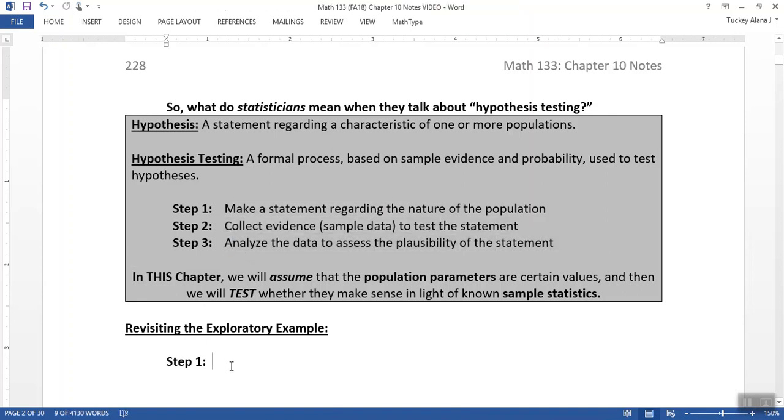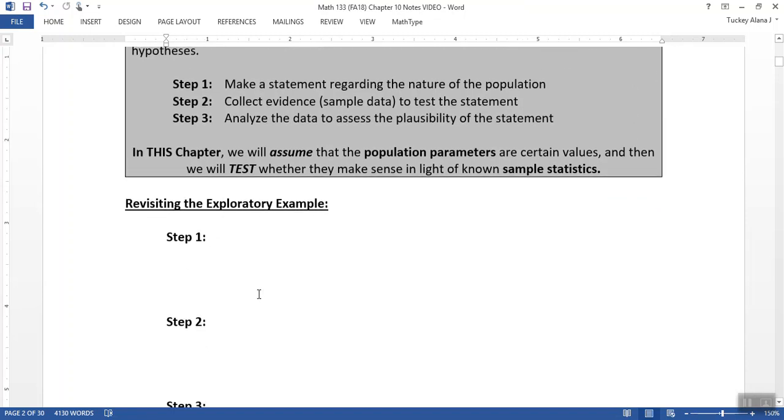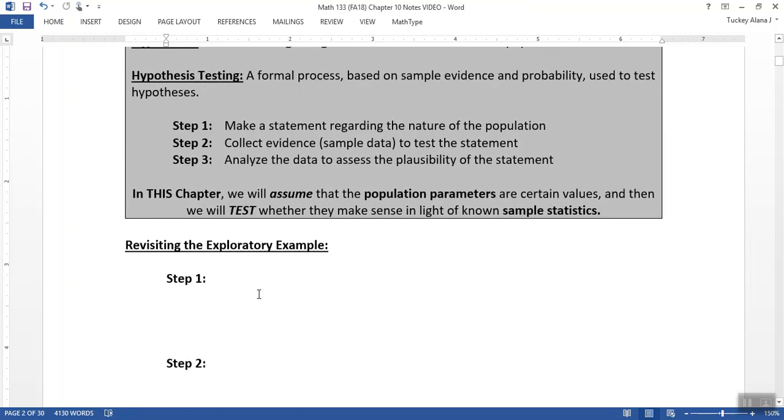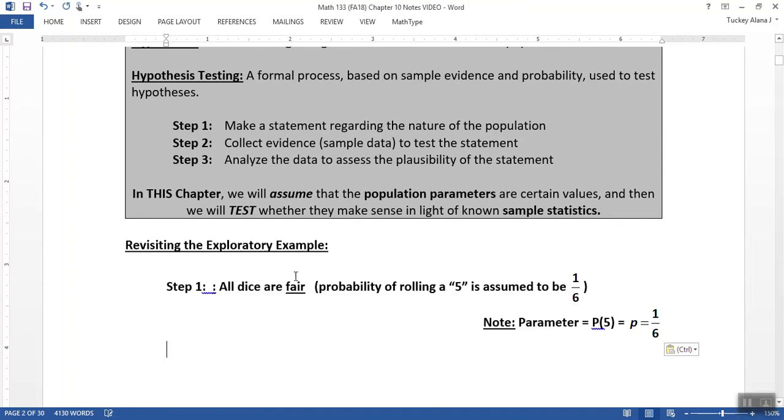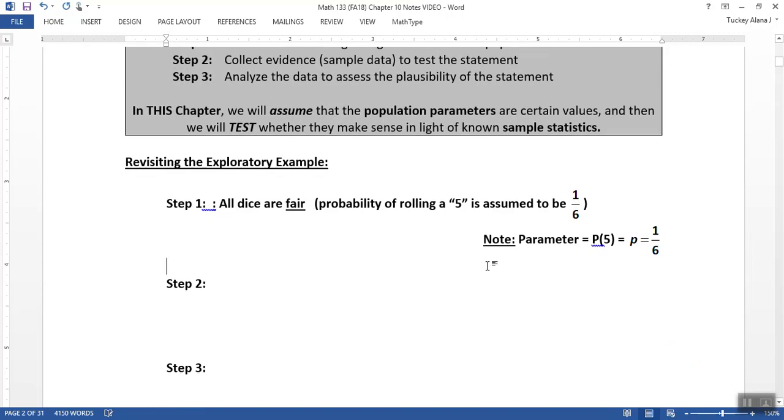So in class, for example, step one is when I pass out the dice, students pick up the dice and they don't even think anything of it. They just assume that the dice are fair. In other words, they're assuming that the parameter P, the probability of success, is 1/6. You just assume that to be true. You picked up a die out of this box of dice I have, and that's what you're going to assume.